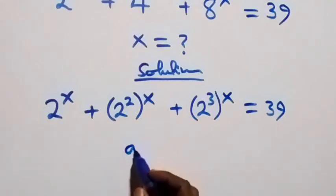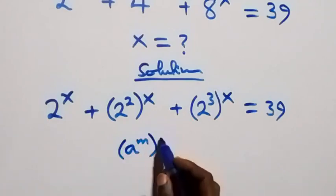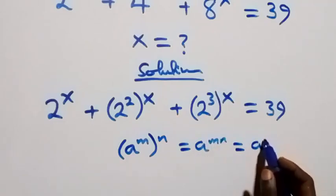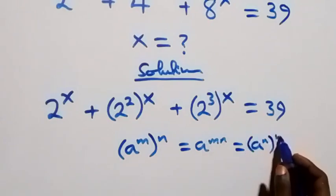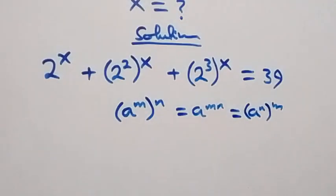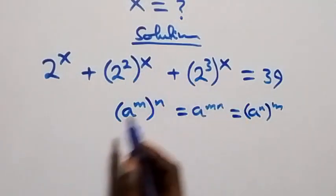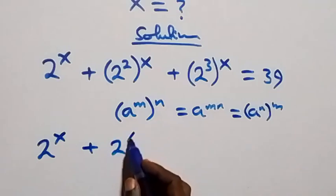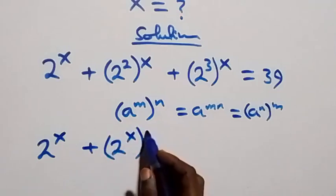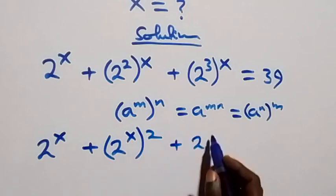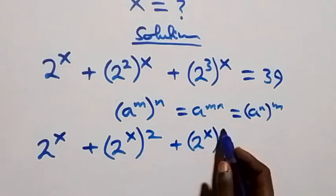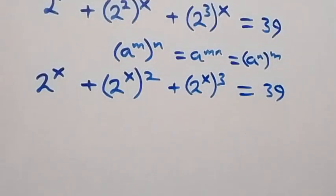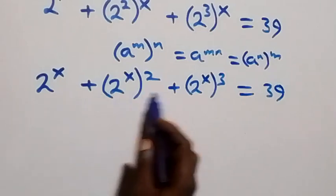From the law of indices, when we have a raised to power m raised to power n, that is the same as a raised to power mn, which is also written as a raised to power n raised to power m — the powers can be interchanged. So we have two raised to power x, plus two raised to power x squared, plus two raised to power x cubed, equals 39.